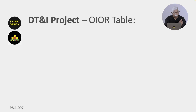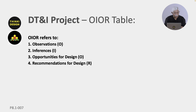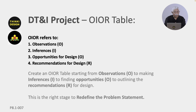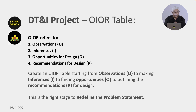Now let us look at the OI OR table. OI OR refers to O for observations, I for inferences, the next O for opportunities for design, and R for recommendations for design. We need to create an OI OR table, starting from observations to making inferences, to finding opportunities, and then to outlining the recommendations relevant for your design.